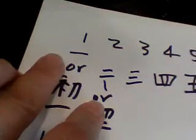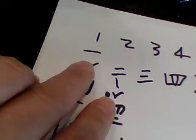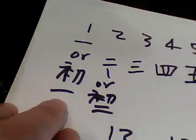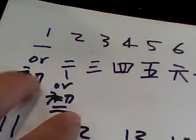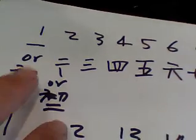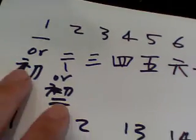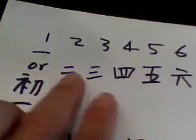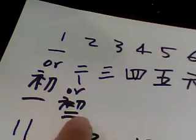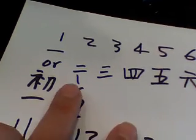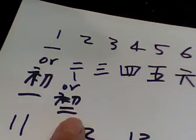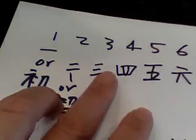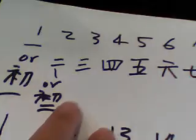One is 'Yi,' or the beginning one. This word 'Chu' means beginning — Chu Yi. Two is 'Er,' or Chu Er.